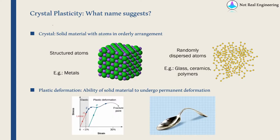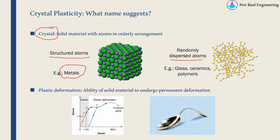Let's start with what the name suggests. Crystal plasticity — the first word is crystal. For any solid material, if you zoom into it, you will find either of two atom structures. First will be structured atoms — not necessarily all atoms have to be of the same element, it can be a compound, but they are in an orderly fashion. Otherwise you will see randomly dispersed atoms. Structured atoms are mostly found in metals, while randomly dispersed atoms are mostly found in glass, ceramics, or polymers.